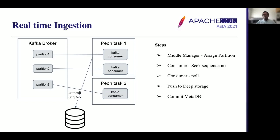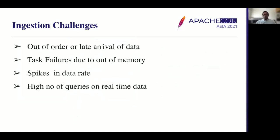Let's discuss the challenges. The Druid ingestion task creates segments based on interval. Late arrival of data results in multiple active real-time intervals. Another challenge is task failure due to out of memory. Accommodating spikes in data can also cause issues — we often size for the spike, not for normal workload. A high number of real-time queries or large variation in query volume on real-time as well as historical data can also cause issues.